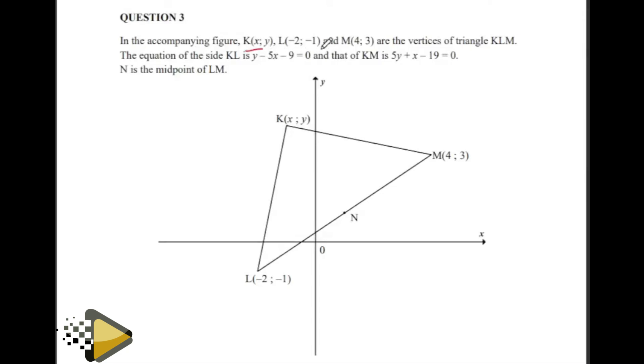This is K, which is X, Y. L is that, and then M is that. These are vertices of the triangle, and then they gave us the equation of KL and the equation of KM. They're telling us that N is a midpoint, so this word midpoint is going to play a big role. It deserves to be highlighted.